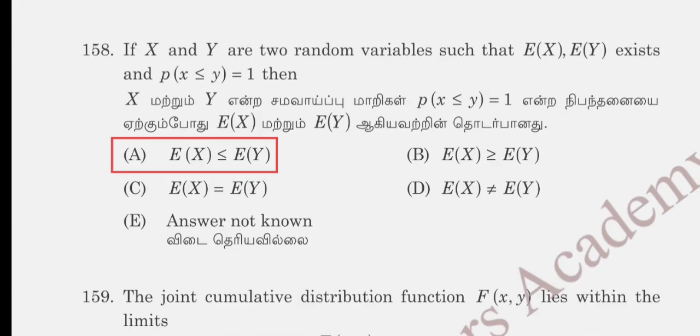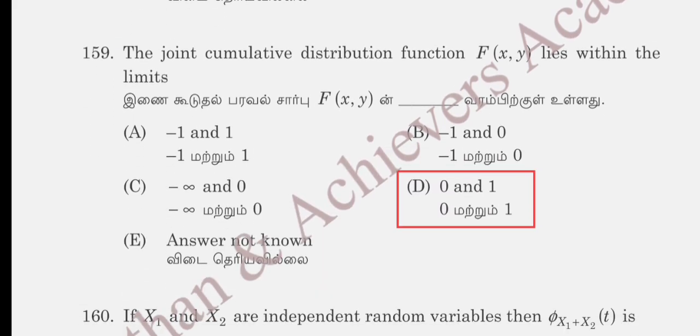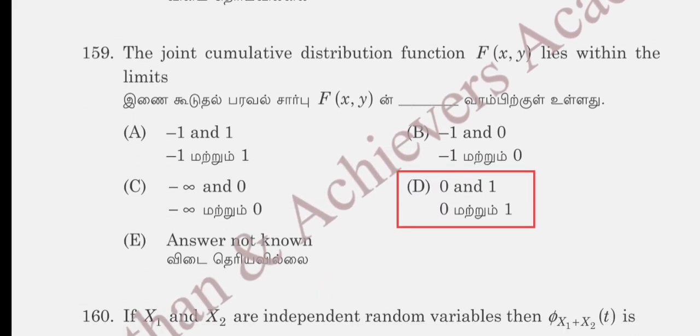Question 158: If X and Y are two random variables such that E[X] and E[Y] exist and the probability of X ≤ Y equals 1, then: option A E[X] ≤ E[Y], option B E[X] ≥ E[Y], option C E[X] = E[Y], option D E[X] ≠ E[Y]. Question 159: the joint cumulative distribution function F(X,Y) lies within the limits 0 and 1, which is the correct answer.